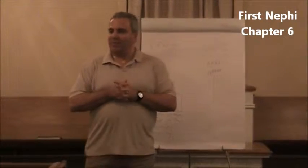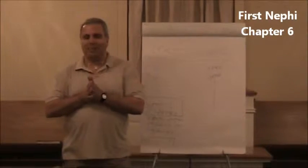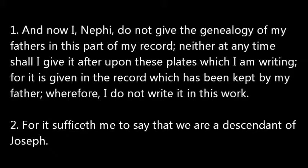We've been going through the first few chapters of 1 Nephi in the Book of Mormon, so tonight we're going to be picking up with chapter 6. And now I, Nephi, do not give the genealogy of my fathers in this part of my record, neither at any time shall I give it after upon these plates which I am writing, for it is given in the record which has been kept by my father, wherefore I do not write it in this work, for it sufficeth me to say that we are a descendant of Joseph.